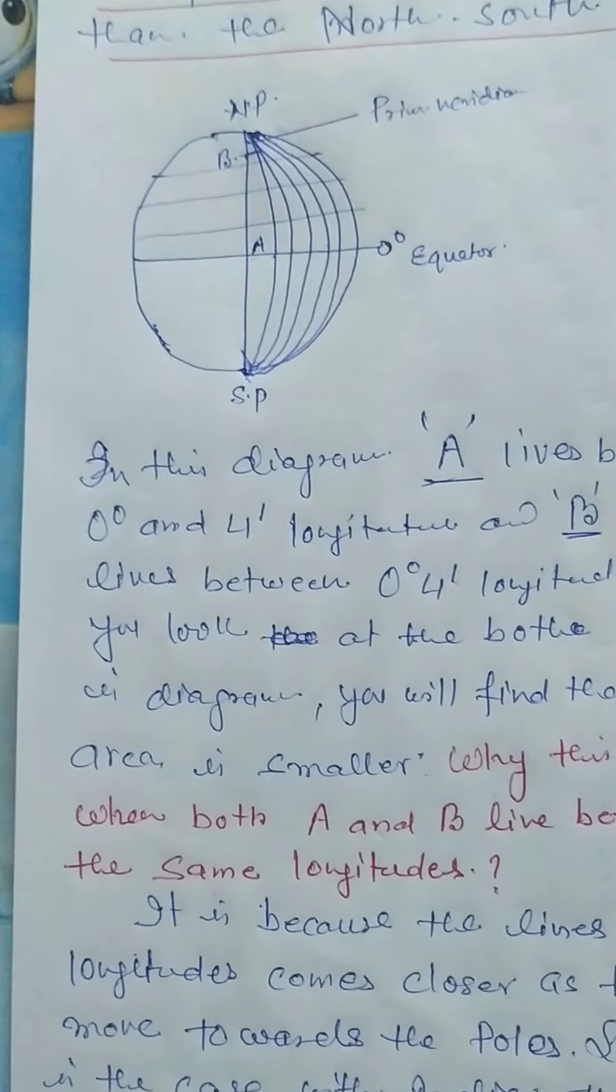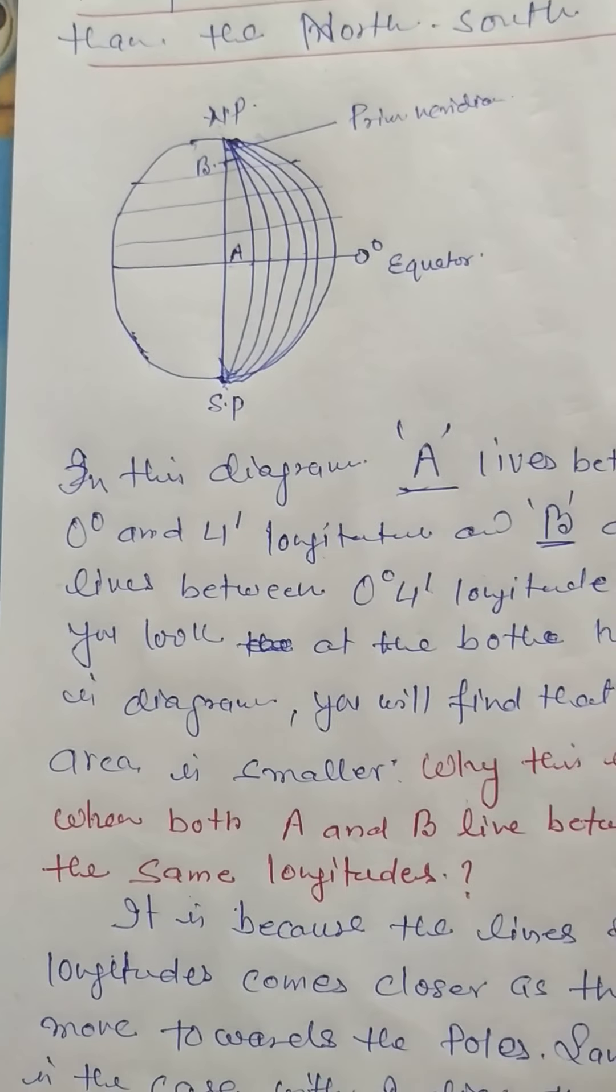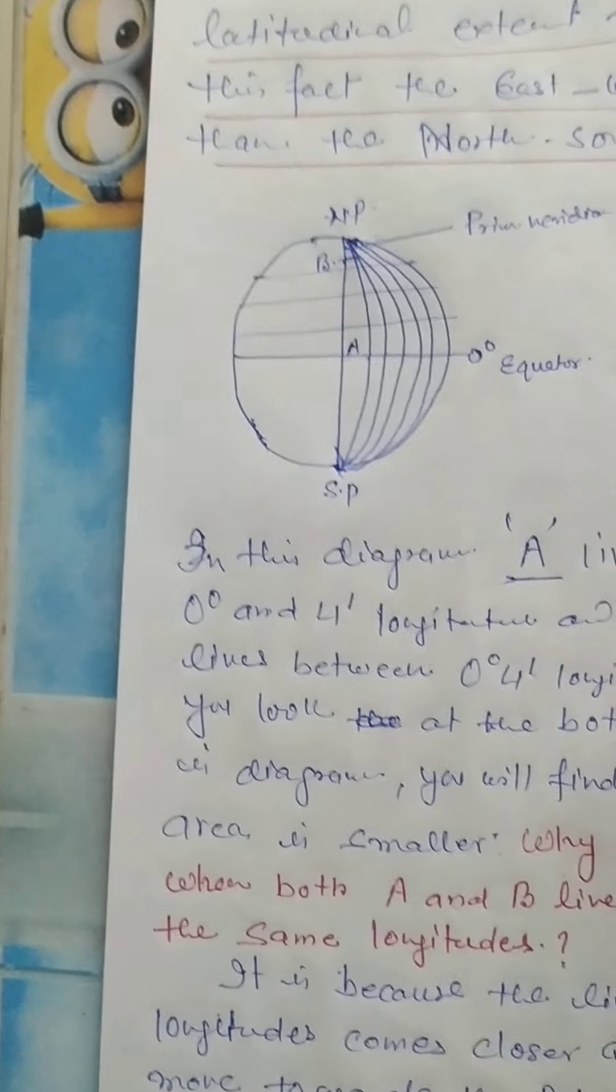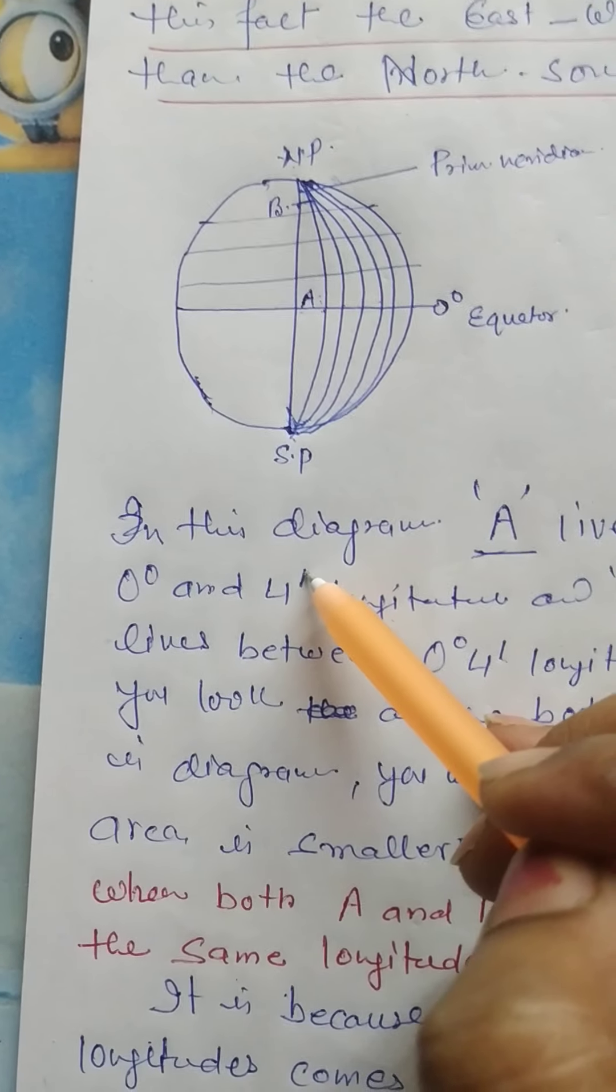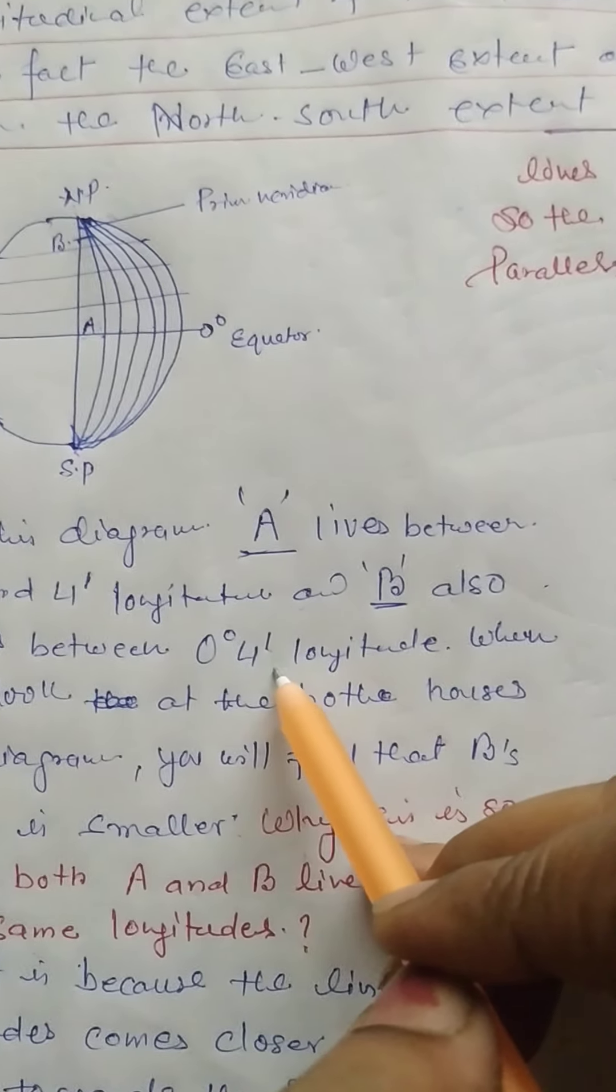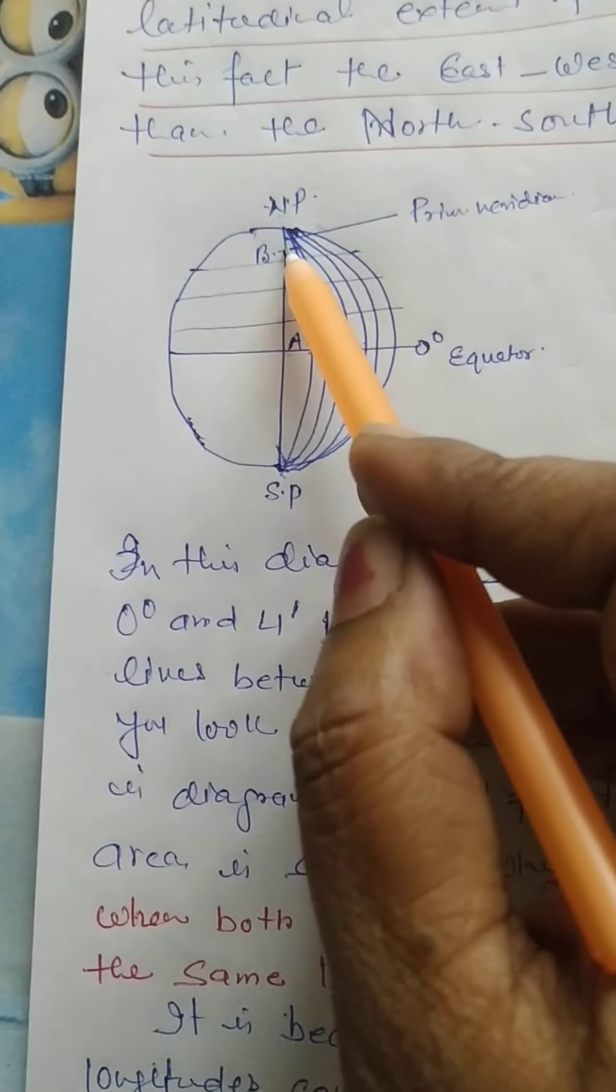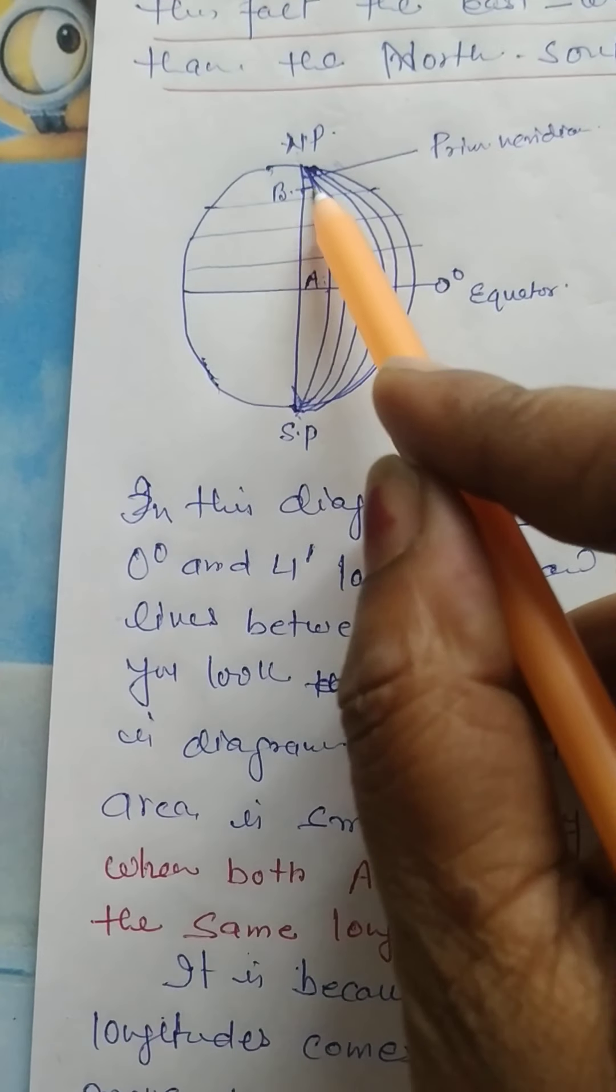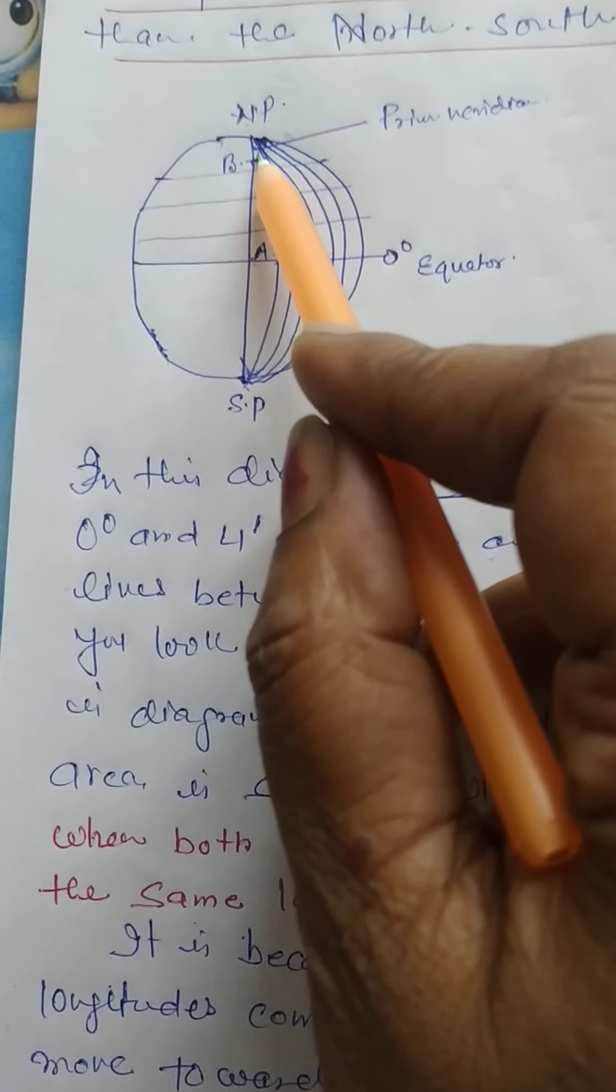So we can say that they are not parallel, whereas latitudes are parallel to each other. In this diagram, now come to the point: A lives at 0 degrees 4 minutes longitude, and B also lives at 0 degrees 4 minutes longitude. Their longitudes are the same. A lives on the equator whereas B lives near the north pole.